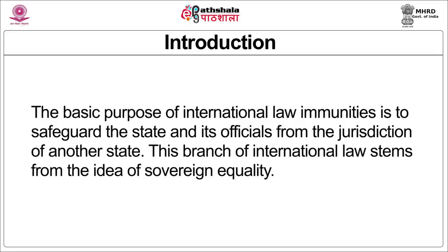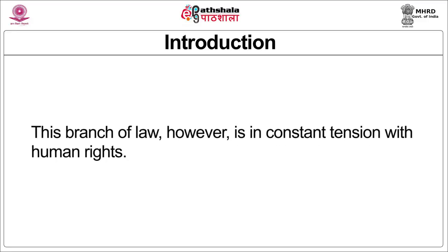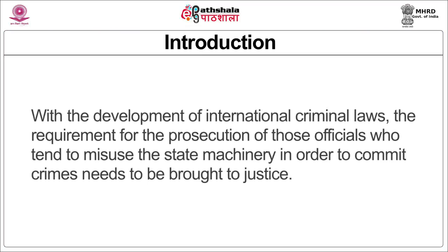The basic purpose of international law immunities is to safeguard the state and its officials from the jurisdiction of another state. This branch of international law stems from the idea of sovereign equality, forming a mechanism that functions to prevent undue interference from other states in the workings of one state. This aspect of law is in constant tension with the existence of human rights and compliance mechanisms to ensure the end of impunity. With the development of international criminal law, the requirement for the prosecution of officials who misuse the state machinery to commit crimes needs to be brought to justice.